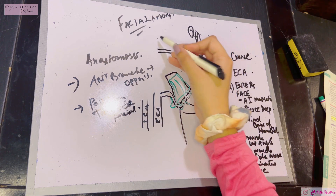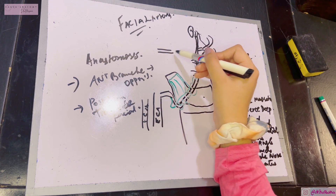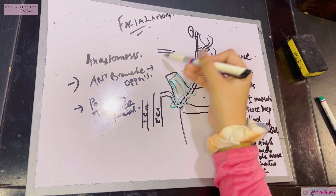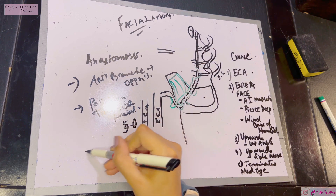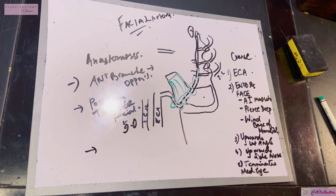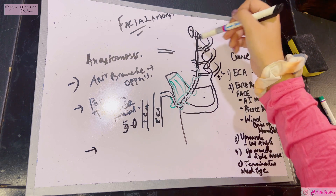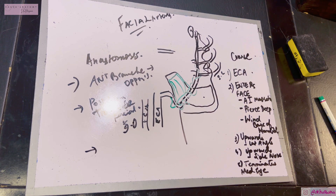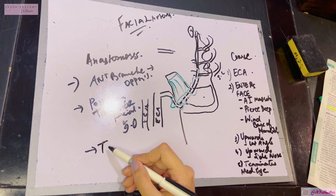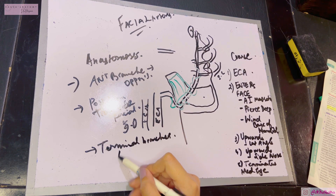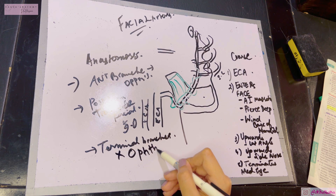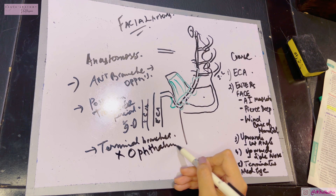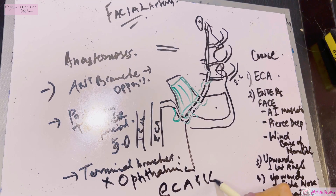The posterior branches of the facial artery anastomose with the transverse facial artery — which is a branch of the superficial temporal artery — and with the infraorbital artery. The final anastomosis occurs at the medial angle of the eye, where the terminal branches of the facial artery anastomose with branches of the ophthalmic artery, making this an important site of anastomosis between the external carotid artery and the internal carotid artery.